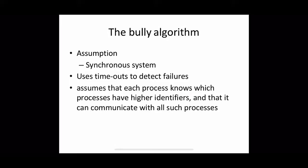Welcome to the second type of election algorithm: the bully algorithm. In the last session we discussed what an election algorithm is and one specific implementation, the ring-based algorithm. The major assumption in ring-based algorithm is that there is no failure in the system. But in a real scenario that is not the case — there can be failures or crashes. So the bully algorithm allows processes to crash, making it more realistic compared to ring-based algorithm.